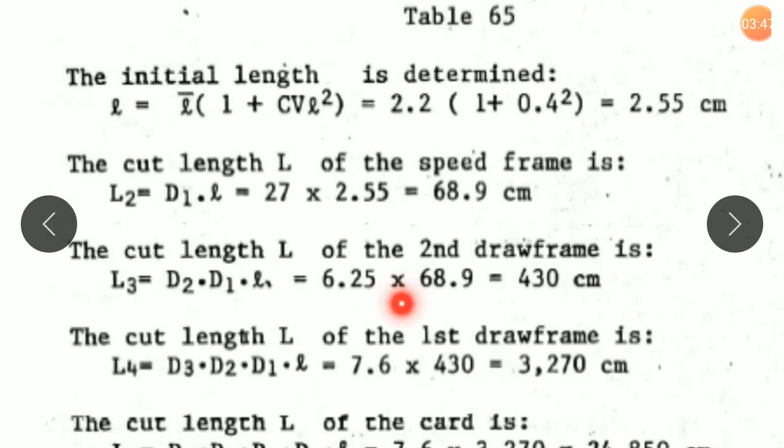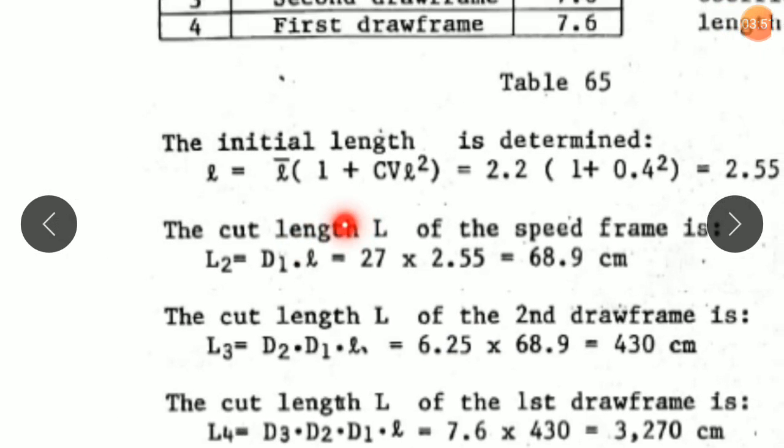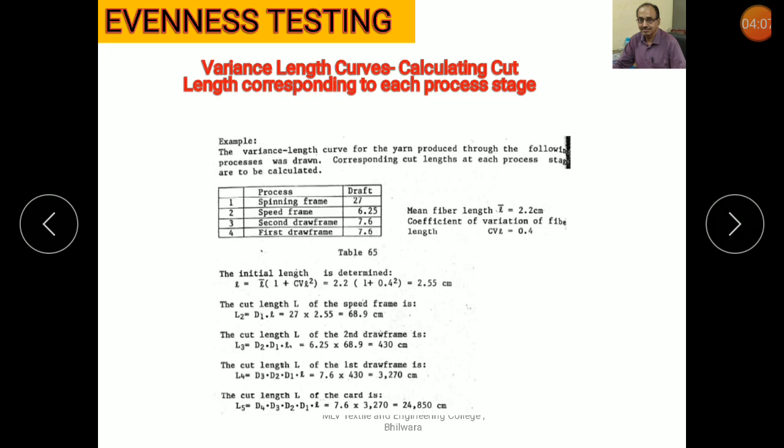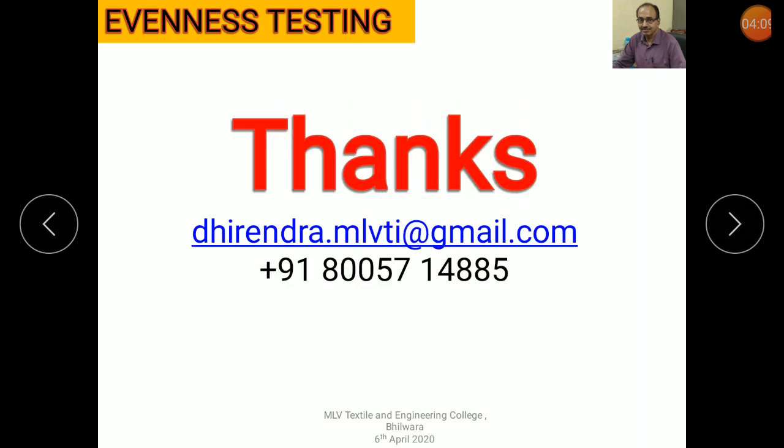At which length it is deviating—instead of being a straight line, where the variance length curve deviates—corresponding to that is the process which is causing the problem, and hence accordingly, steps can be taken to rectify this.